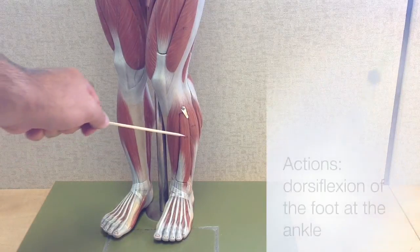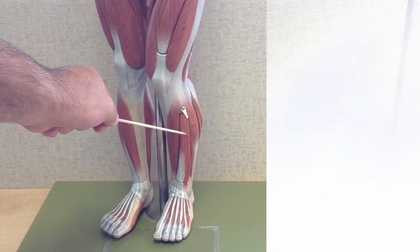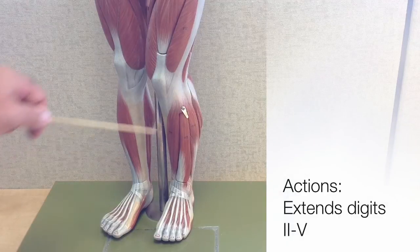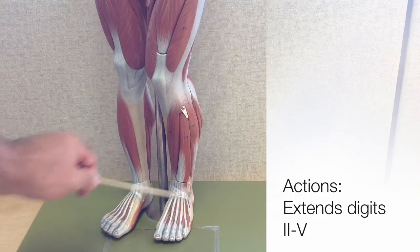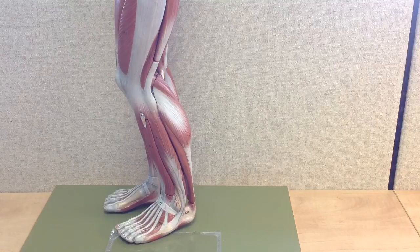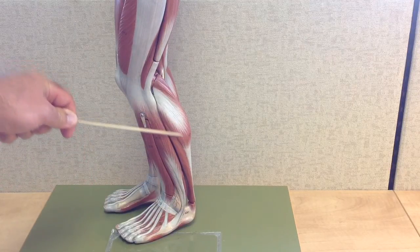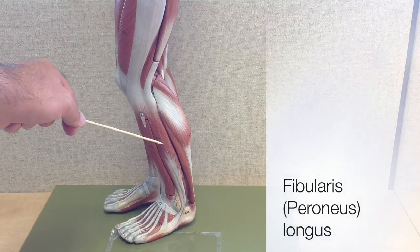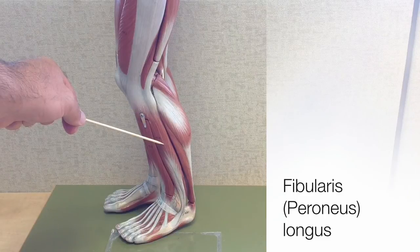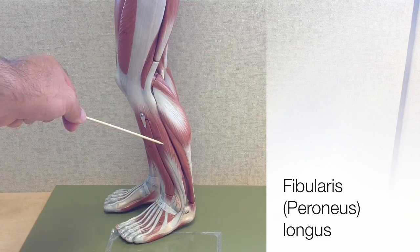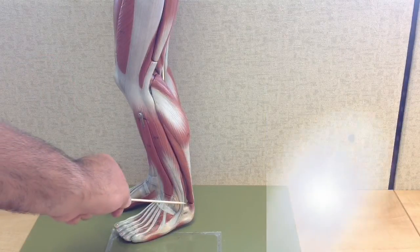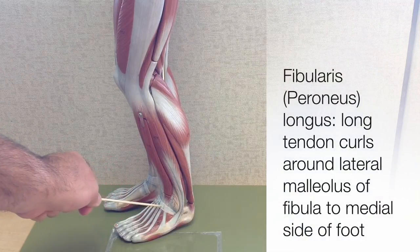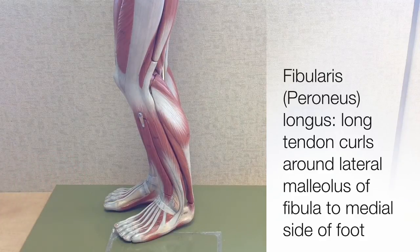Like the tibialis anterior, it also dorsiflexes the foot at the ankle, but it's called an extensor muscle for a reason — it's used to extend or lift up digits 2, 3, 4, and 5. Our next two muscles of the lower leg we can see most clearly from the lateral side. This is the fibularis longus, and its older name, which is still commonly used, is the peroneus longus. It's also referred to as one of the two peroneal muscles, often called collectively the peroneals. We don't see it here on the model, but it then swoops around over to the medial side of the foot at its insertion points.